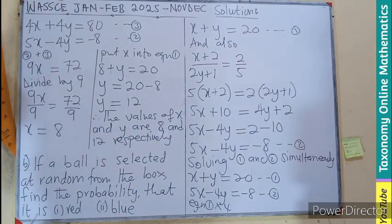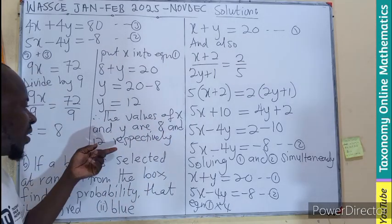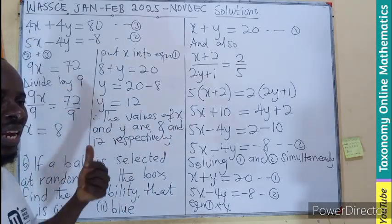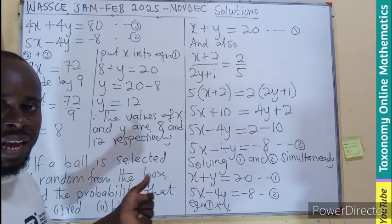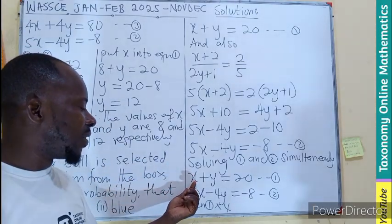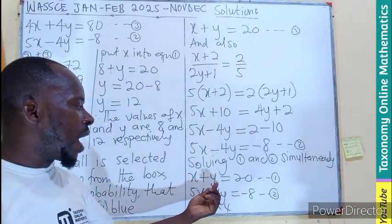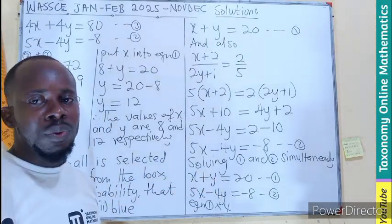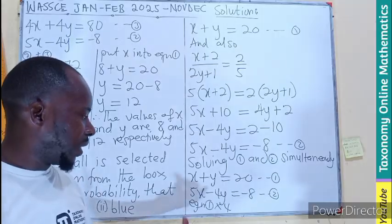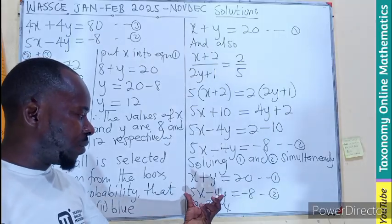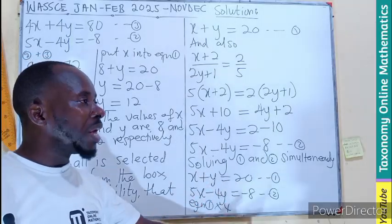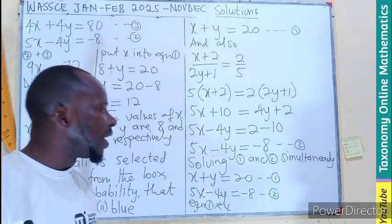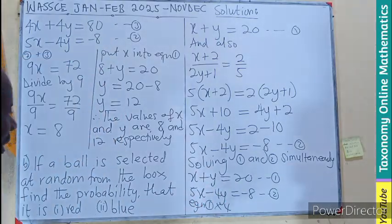I think the first part of the question has been answered — finding the value of X and Y. You can see that when X is 8 and Y is 12, when you add them you get 20. What is the next question?